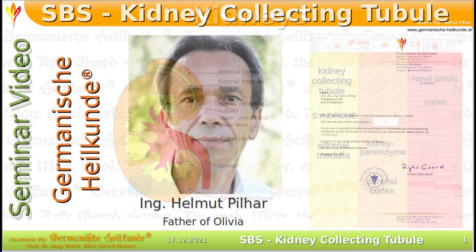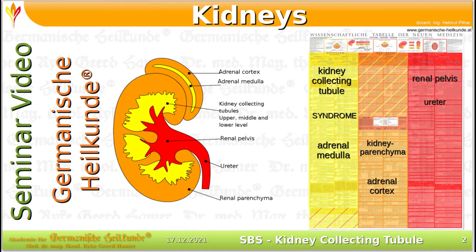This seminar video tutorial is about the sensible biological special program of the kidney collection tubes. The task of this SBS is to resolve a refugee, respectively existential conflict. The symptoms of the active phase, the conflict resolved phase, the crisis, and the residual state at the end of the healing phase are explained.